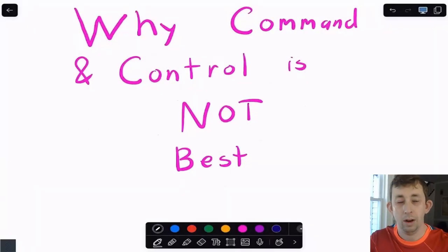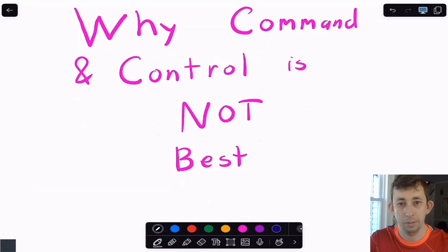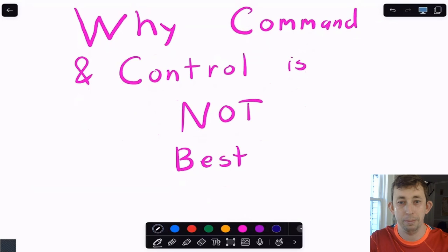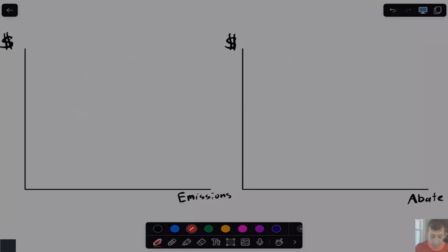Hey guys, today I'm going to talk about why command and control is not best when we're talking about controlling emissions. In doing so, I'm going to review the marginal abatement cost curve and marginal damage function curve for the graph where you have both emissions and abatement on the x axis. Those are two separate graphs, we're going to go through each of them. Timestamps are below if you would like to jump around, but let's start reviewing this graph.